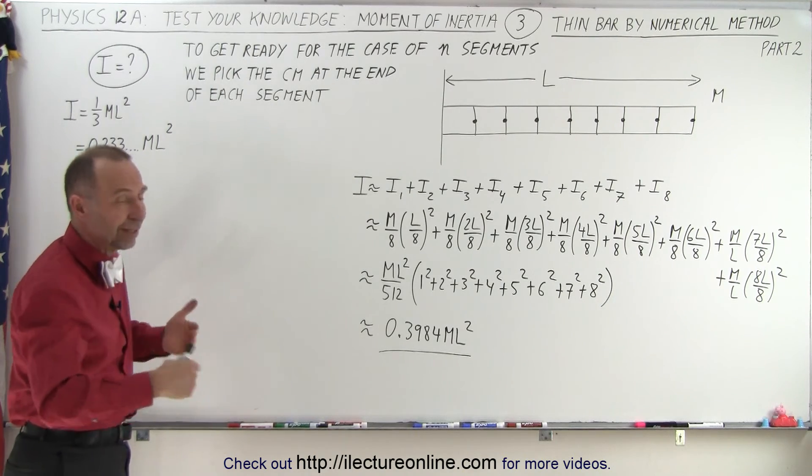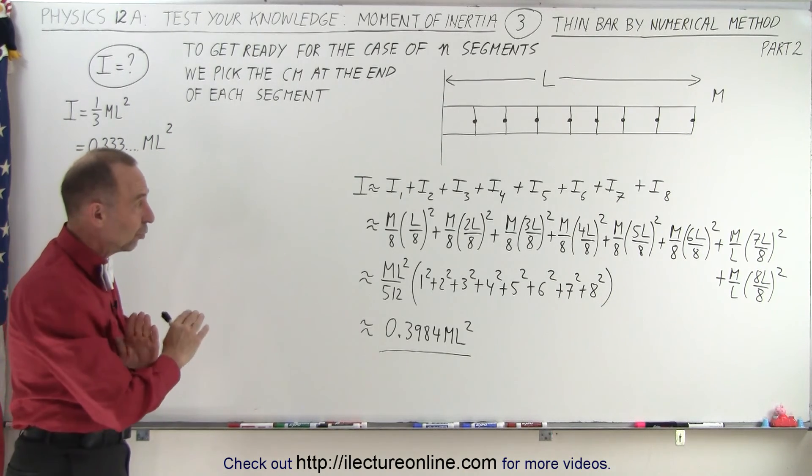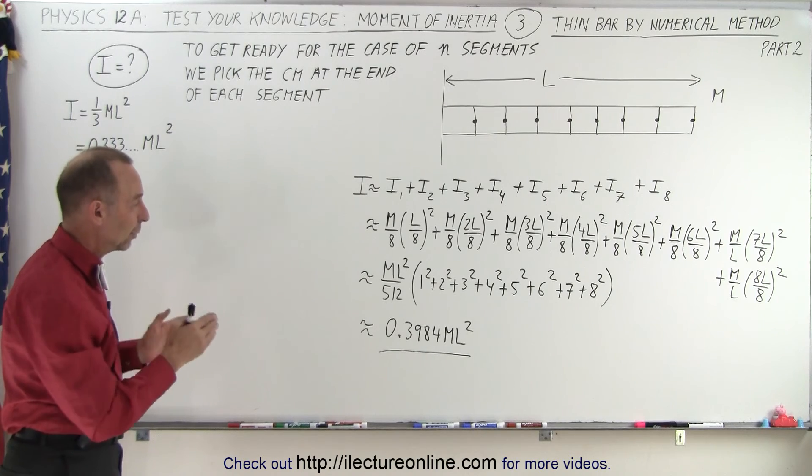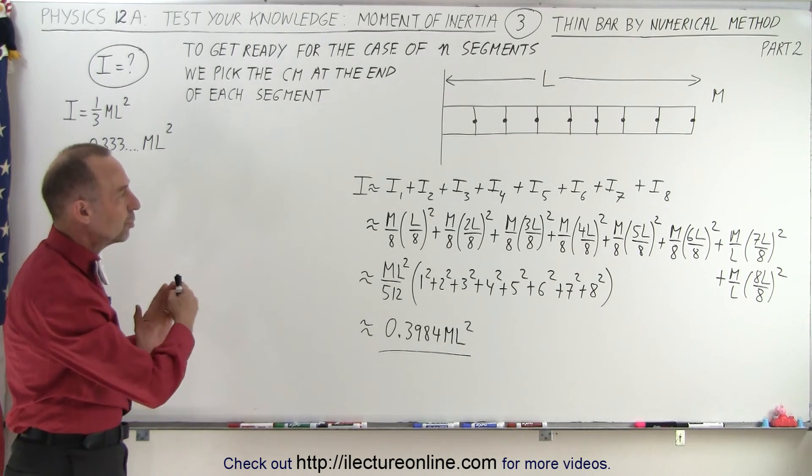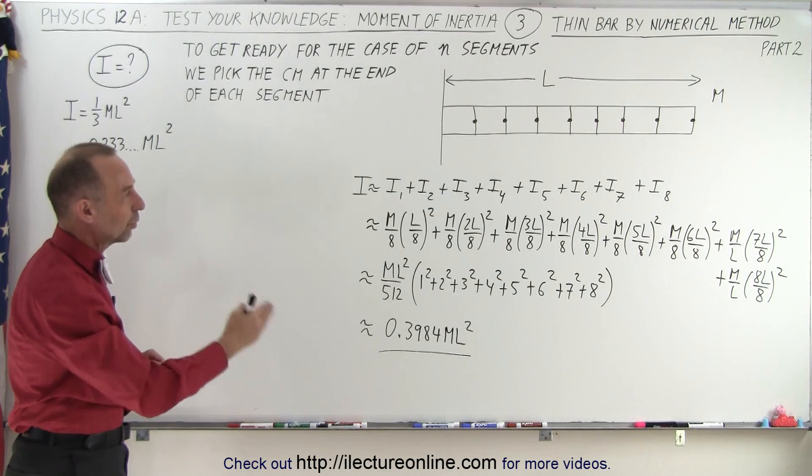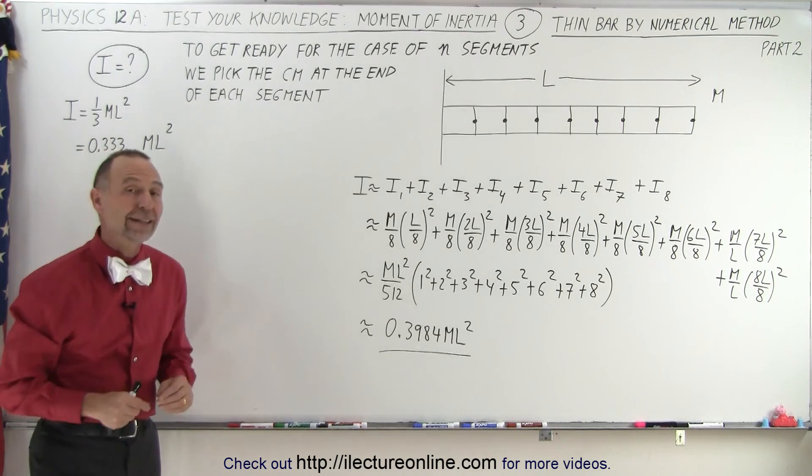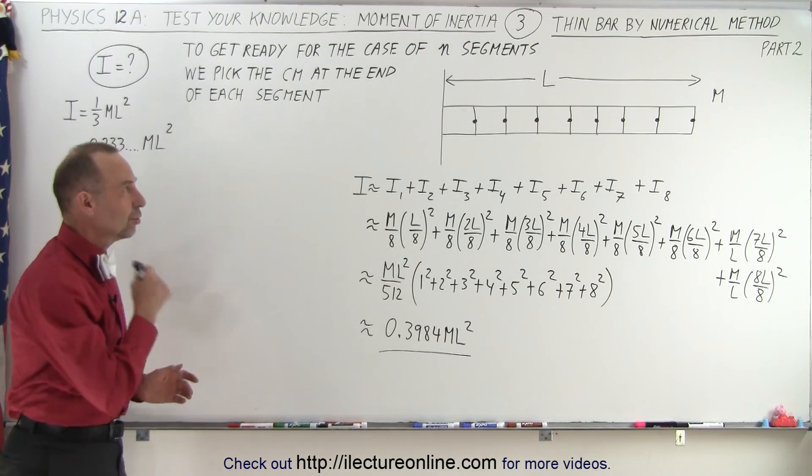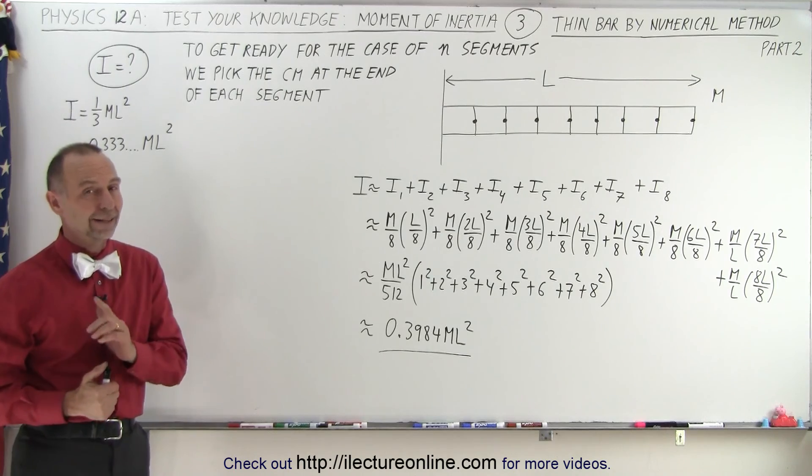But as we increase the segments, in the end as n goes to infinity, that's no longer going to make any difference, and we'll get the exact value. Now we're all set up to do the case for n as n goes to infinity, and now we'll find the exact moment of inertia using numerical methods. And that is how it's done.